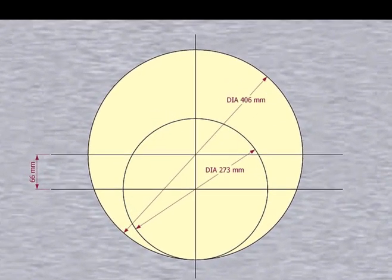Please remember that our reducer size is 16 inch into 10 inch. The large side OD is 406 millimeters, the small side OD is 273 millimeters, and the eccentricity is 66 millimeters.